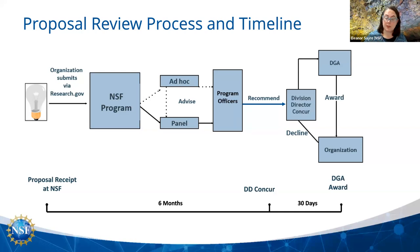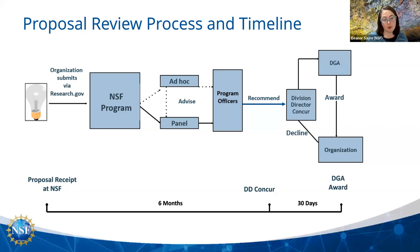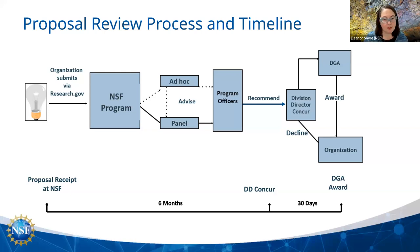This recommendation goes from the program officer to the division director, who will likely concur. If it's headed for decline, your organization will receive a decline letter. If it's headed for award, it goes to DGA — the Division of Grants and Agreements — who will process the paperwork to turn the recommendation into an award. The entire process from submission to division director concurrence is about six months, and an award going to DGA takes about an additional month. Error bars on this six months could be a few months plus or minus — more likely plus. So when you're thinking about your start date, don't make it too soon.